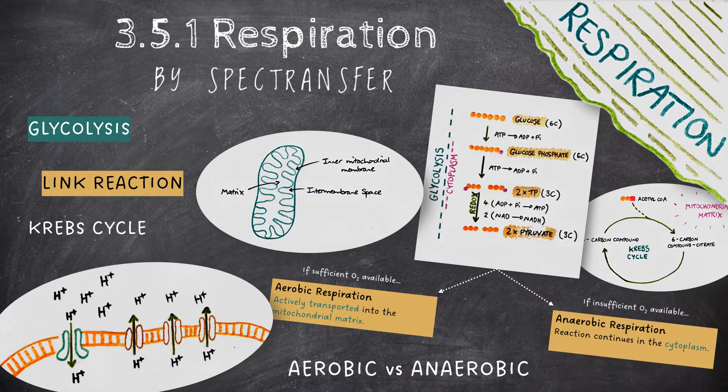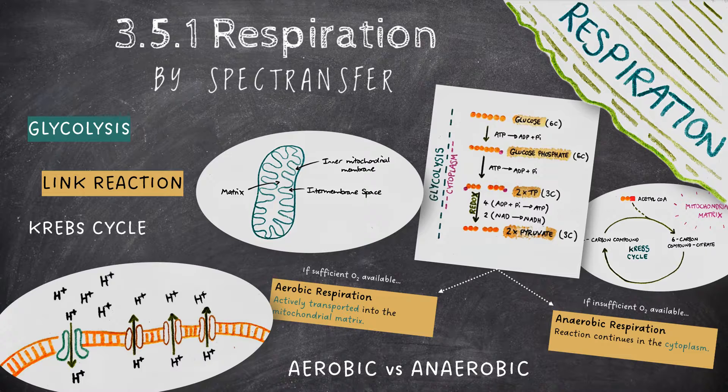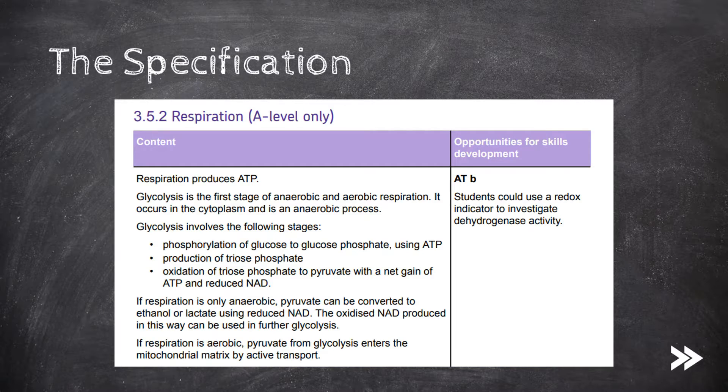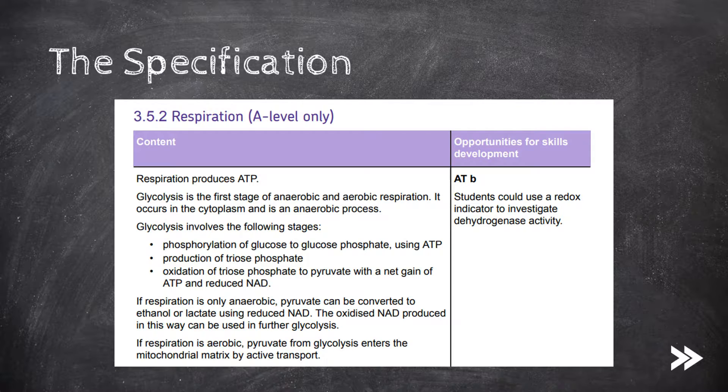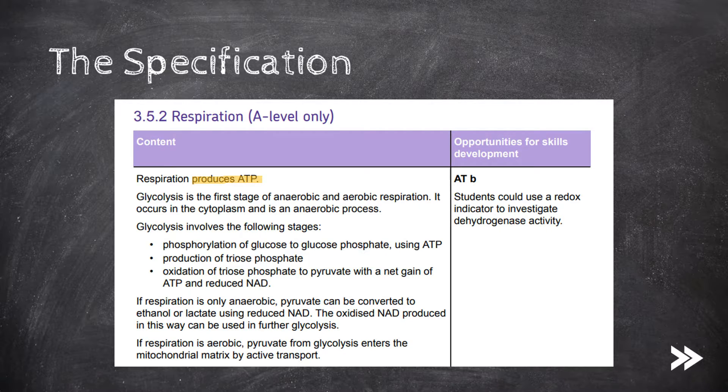Hey guys, welcome to SPECTransfer and to topic 3.5.2, respiration from the AQA A-level biology specification. So let's start with an overview of what we've got to know. Why do we even need respiration in the first place? Well, respiration is needed to produce adenosine triphosphate, ATP, a molecule that acts as a hugely important energy source within cells.